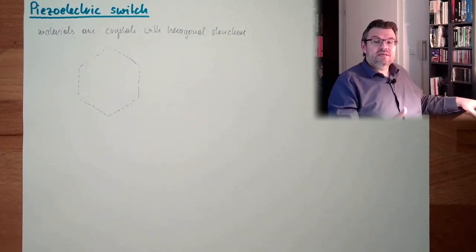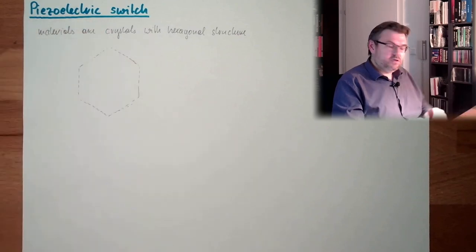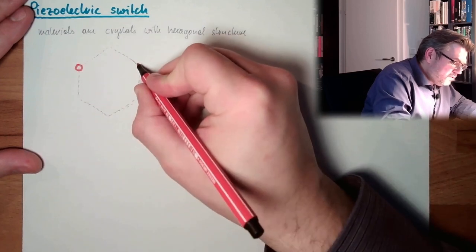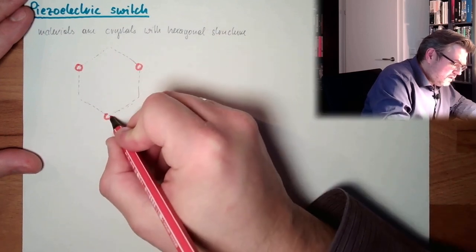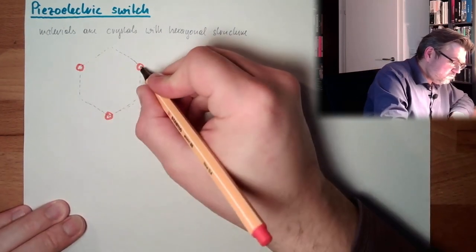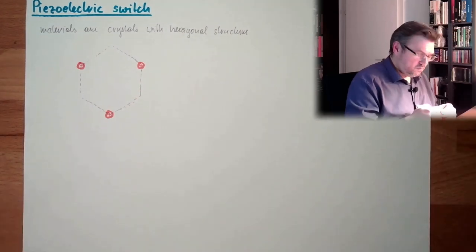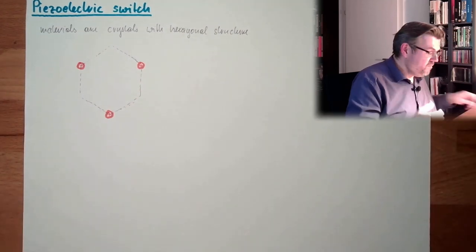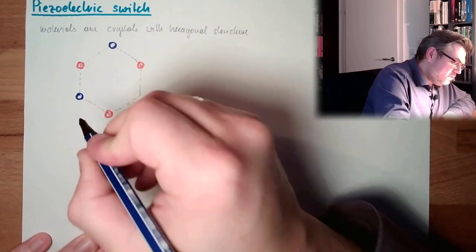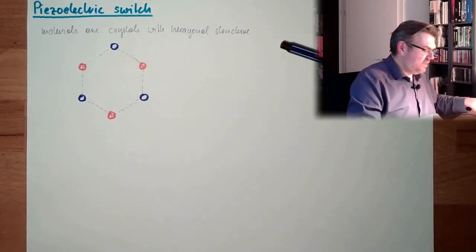And the atoms in such crystals are organizing themselves in a hexagonal structure. And usually these are ions. So you have here, at the corners of this hexagon, you have some positively charged ions, atoms. And in between, you have some negatively charged ions in this crystal. And they're organizing themselves in this hexagonal structure.